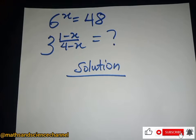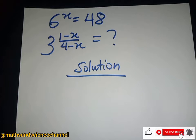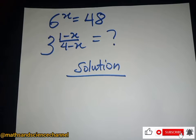Hello everyone, welcome once again. Now in this section we have an exponential equation. We have 6 to the power x being equal to 48. Then what is 3 to the power of (1 minus x) divided by (4 minus x) equal to?